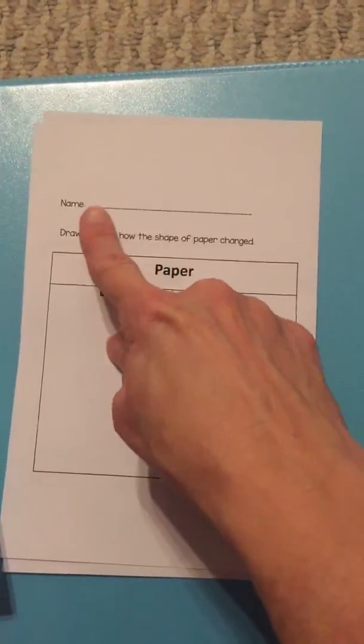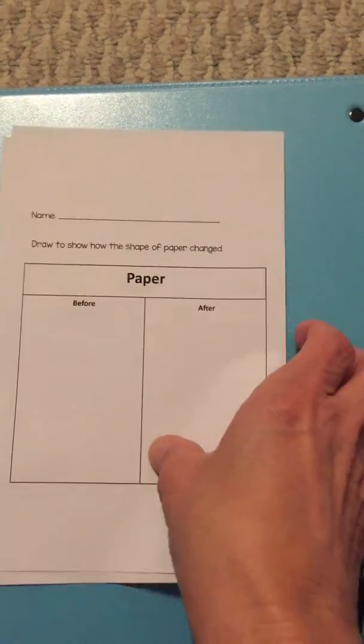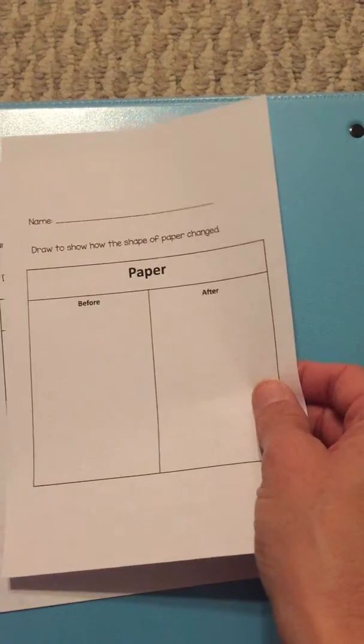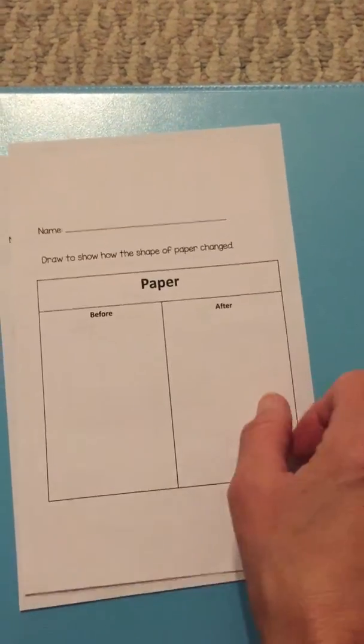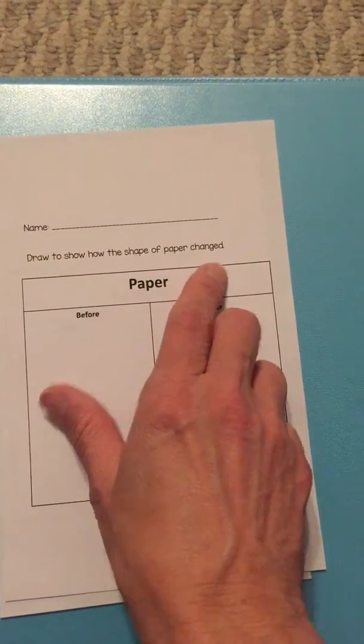Welcome back. Okay, the first thing you're going to do is write your name on the paper, and then draw a picture of what your paper looked like before you changed it. The directions say, draw to show how the shape of paper changed.